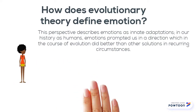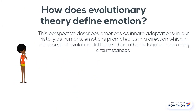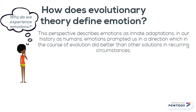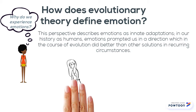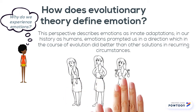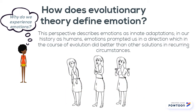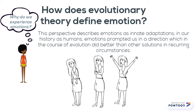This perspective describes emotion as innate adaptations. In our history as humans, emotions prompted us in a direction which, in the course of evolution, is better than other solutions in recurring circumstances. Additionally, emotions and accompanying facial expressions such as sadness, anger, or joy act as signals to other members of our species.